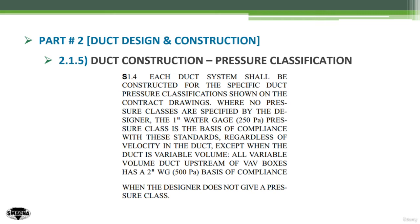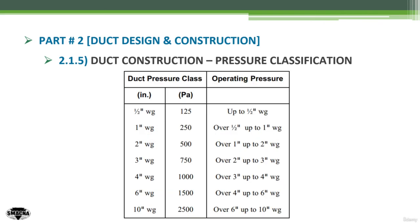The exception is variable volume systems: all variable volume duct upstream of the VAV boxes should have a two-inch water gauge basis of compliance when the designer does not give a pressure classification.